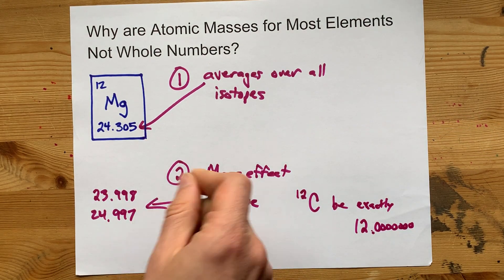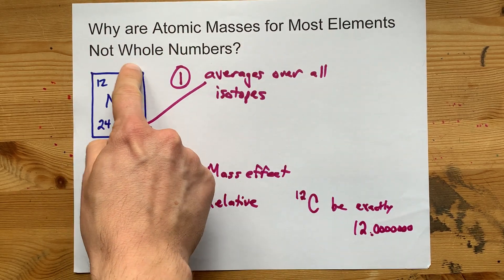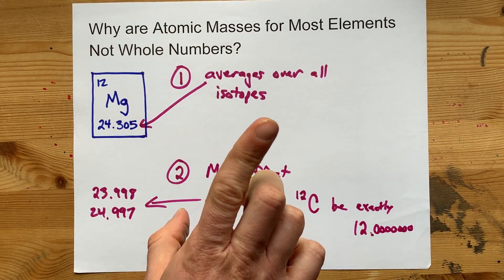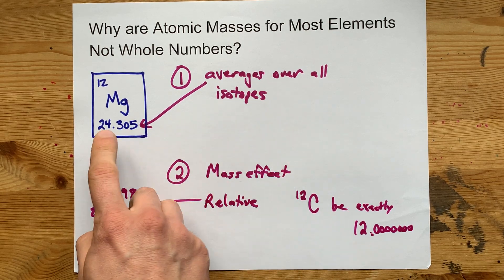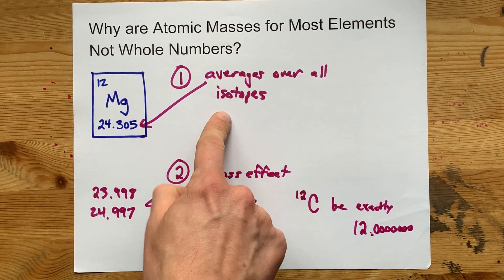So the answer to this question, why are atomic masses not whole numbers, depends on whether your teacher's asking you about the numbers on the periodic table, which are averages over many isotopes,